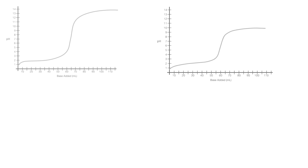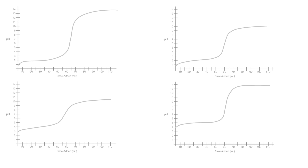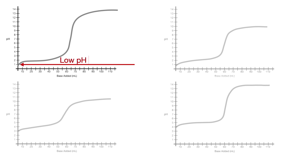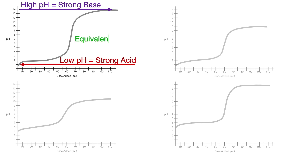There are four general acid titration curves. Determining acid-base strength just by looking at titration curves is super simple. If titration starts at a low pH, it indicates a strong acid, and if it ends at a high pH, it indicates a strong base. A strong acid-strong base titration curve will have an equivalence point at neutral pH of 7, right in the middle of the pH scale, because they have equivalent strength.